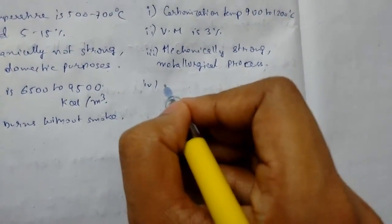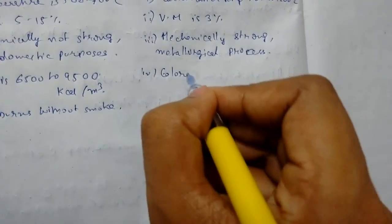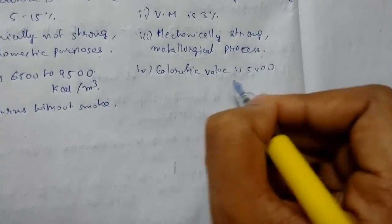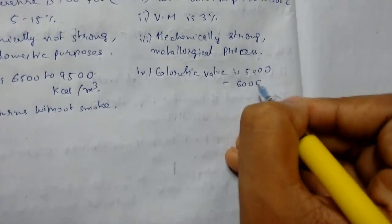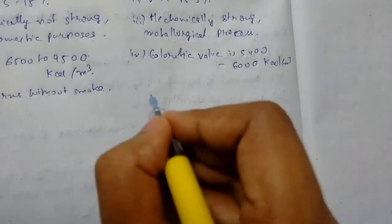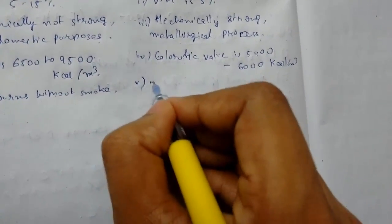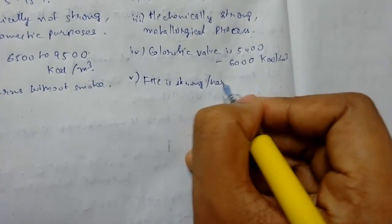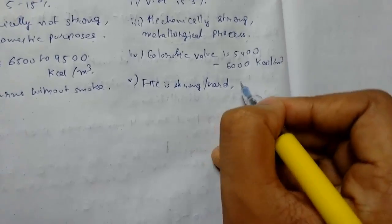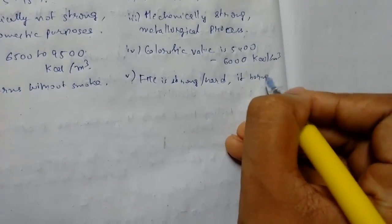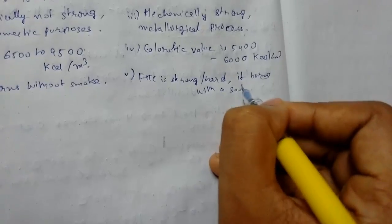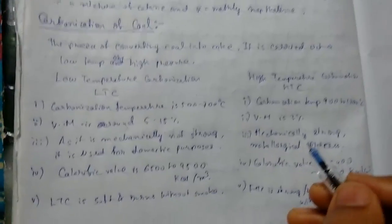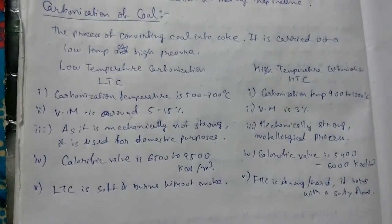Number four, we have calorific value that is 5400 to 6000 kilocalorie. Number five, HTC is strong or hard. It burns with a sooty flame. So this was all about carbonization of coal. Thanks for watching.